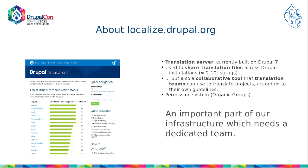It serves translations over HTTP, but more precisely, it's actually a Drupal 7 instance — so you can guess we have a problem here. It is used to share translation files across Drupal installations. We host about 2 million strings, which is quite a lot in the world of free and open source software. More than that, it's actually a collaborative tool that translation teams can use to translate projects according to their own guidelines, thanks to a permission system based on organic groups.